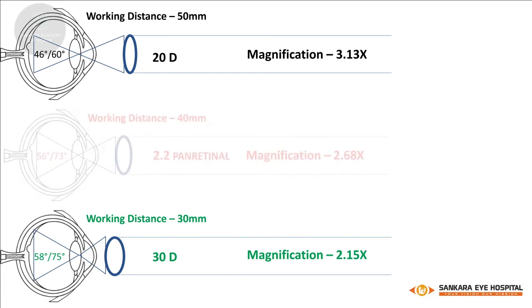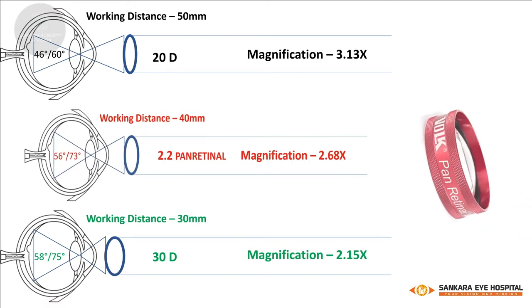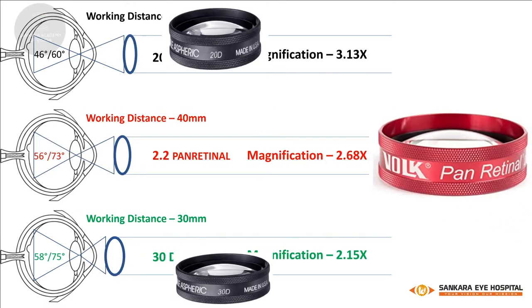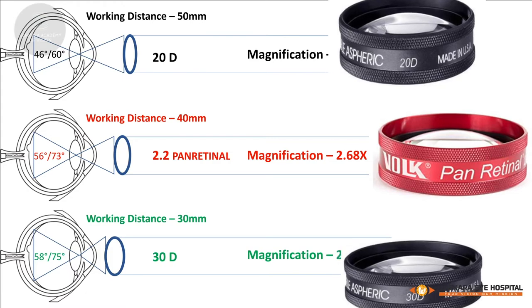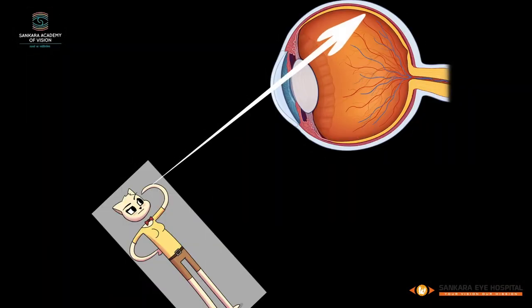The panretinal 2.2 lens uniquely combines magnification nearly that of the 20-diopter lens with a field of view approaching that of the 30D lens. To aid visualization of the peripheral retina, indentation is needed to bring the area of interest into focus.